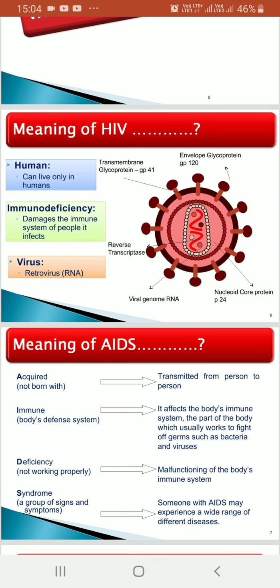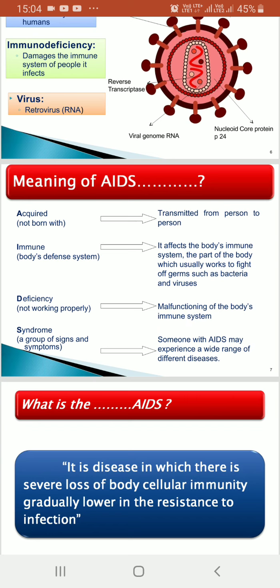The full form of HIV is Human Immunodeficiency Virus. 'Human' means this virus only attacks human beings. 'Immunodeficiency' means the immune system of whoever is infected by this virus gets damaged. The virus belongs to the retrovirus category, where RNA is used for replication.